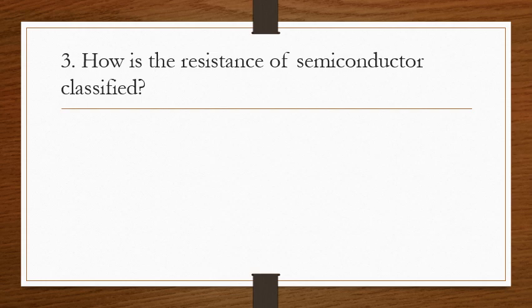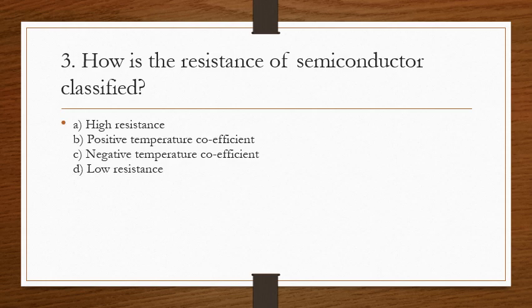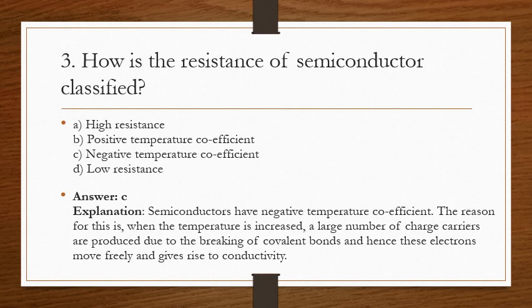The third question: how is the resistance of a semiconductor classified? The correct answer is C. Semiconductors have a negative temperature coefficient. When temperature is increased, a large number of charge carriers are produced due to the breaking up of the covalent bonds, and these electrons move freely, giving rise to an increase in conductivity.